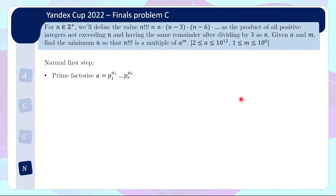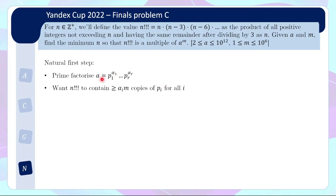We'll talk about how to do this efficiently later when we discuss the implementation. But once you have this prime factorization, you will want n triple factorial to contain at least alpha_i * m copies of each prime, because a to the m will have alpha_i * m copies of each prime. Once n triple factorial contains at least that number of copies of the prime, you'll be done.